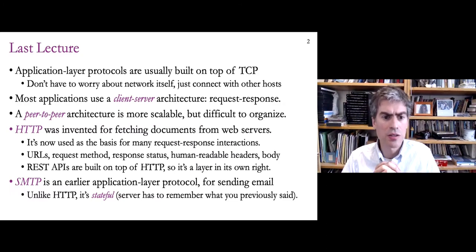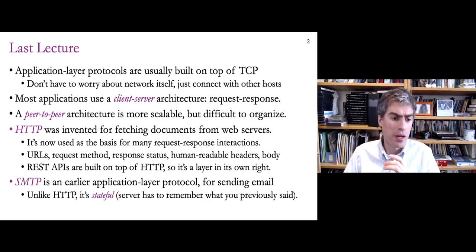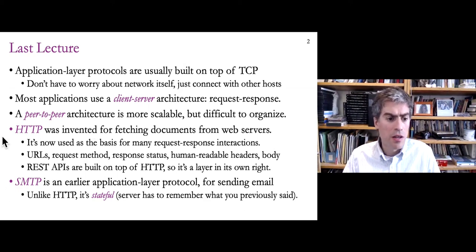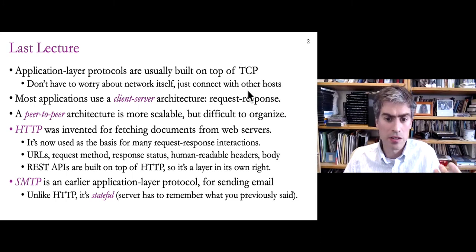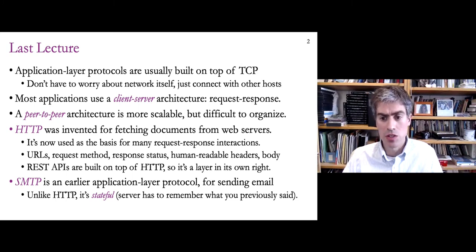In the last lecture we introduced application layer protocols. We described HTTP, the hypertext transport protocol, in a lot of detail. HTTP, like most application layer protocols, is built on top of TCP because TCP provides the illusion of a reliable bidirectional stream of communication between two machines, and so it hides a lot of details of the network.